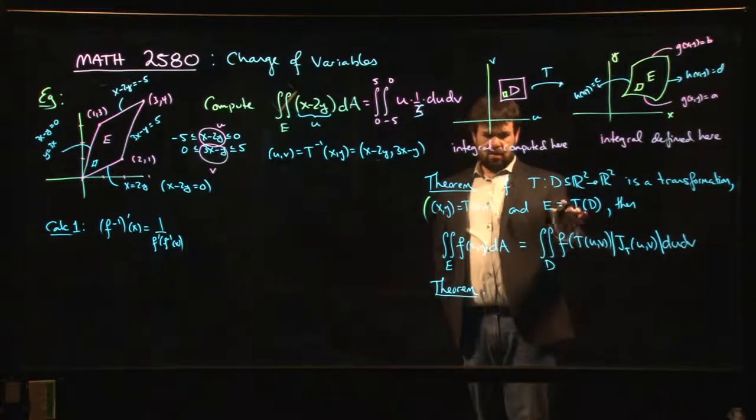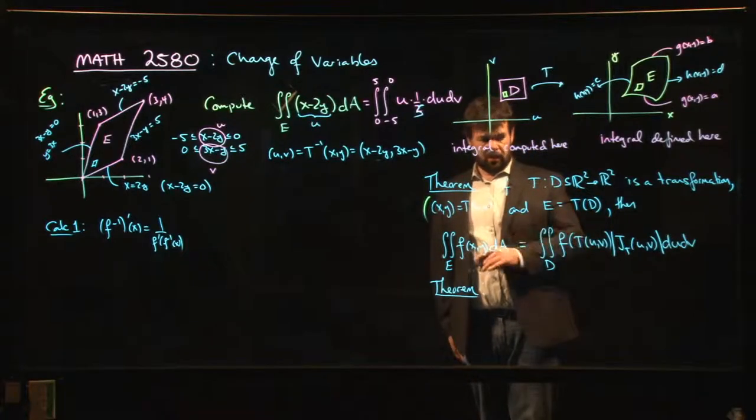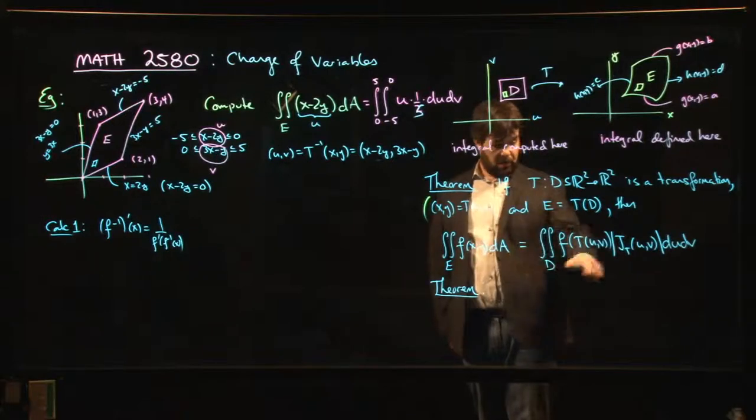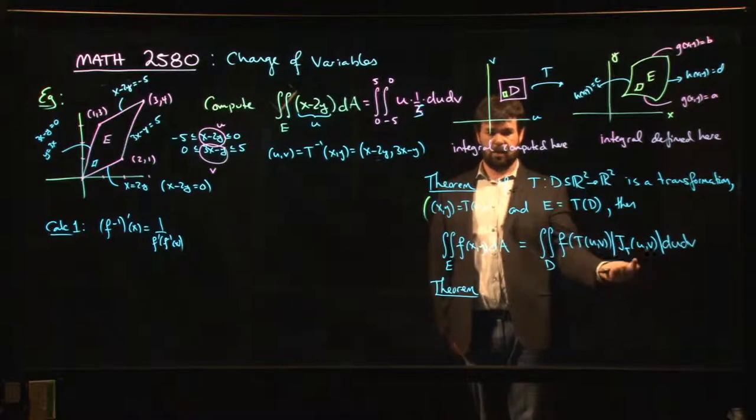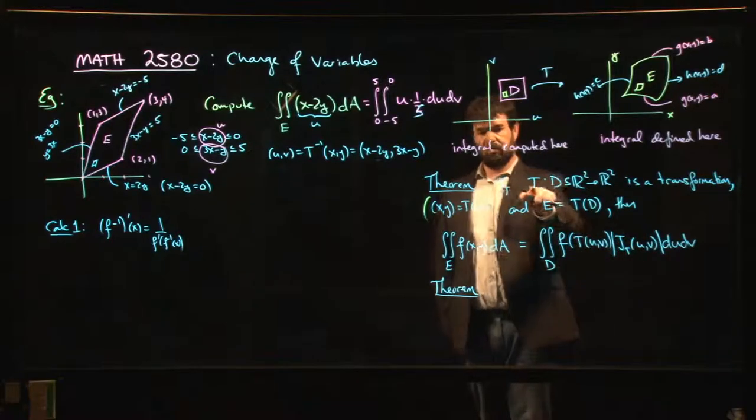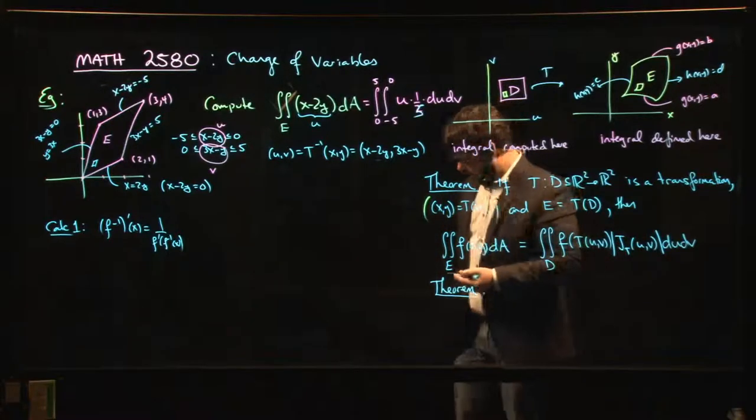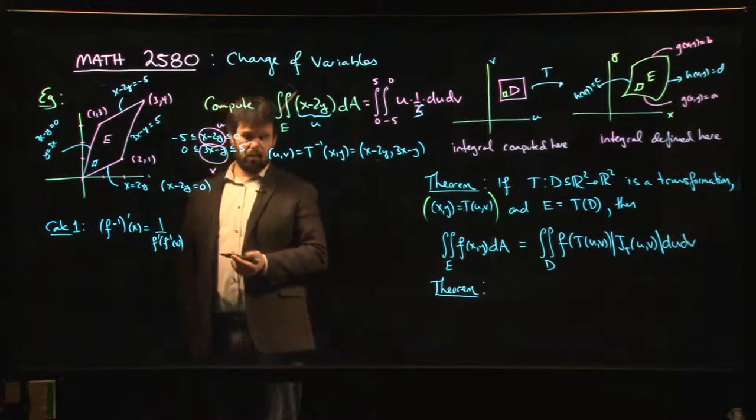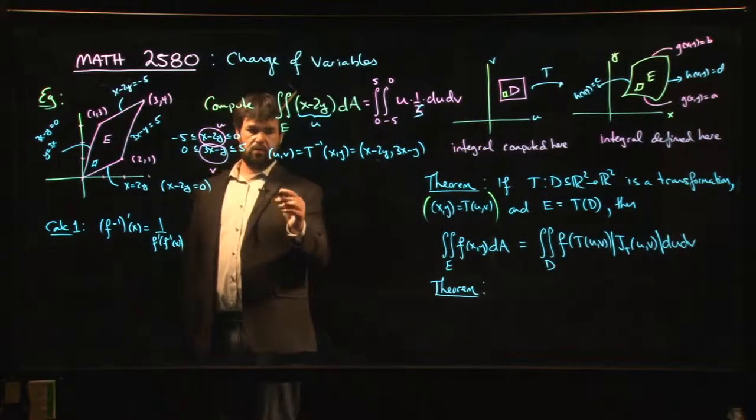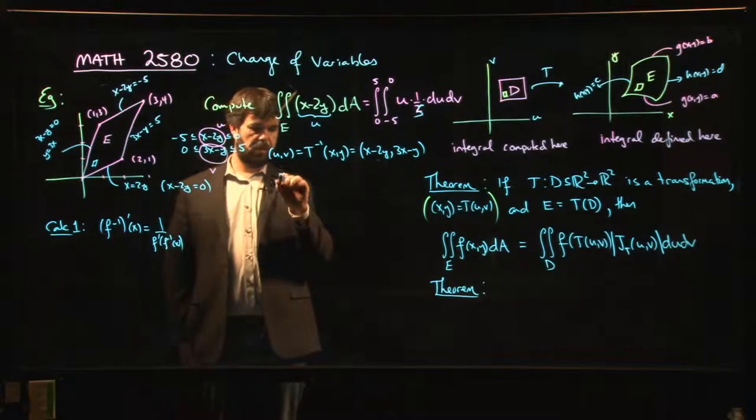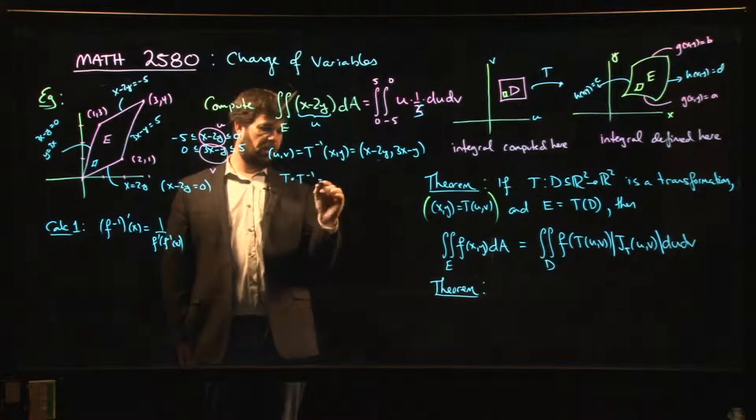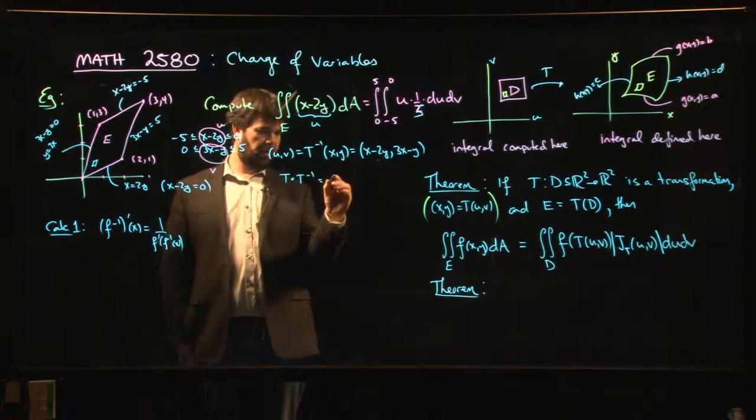Well, you can play the same game over here. The details are in the textbook, but it more or less amounts to the fact that this Jacobian - it's the determinant of a linear map. That linear map is the derivative of this transformation T. And it turns out that essentially by chain rule, well, here's one thing we know: we know that T composed with T inverse is the identity.